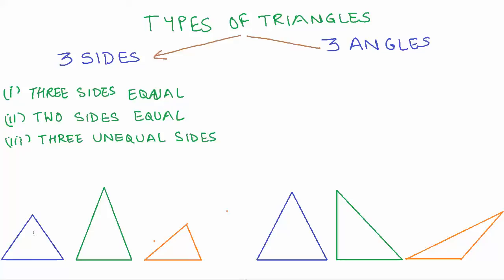Now for the first case, let's look at this blue triangle with vertices A, B, and C. This triangle has the same length for sides AB, AC, and BC. This type of triangle is known as an equilateral triangle — that is the first type of triangle.